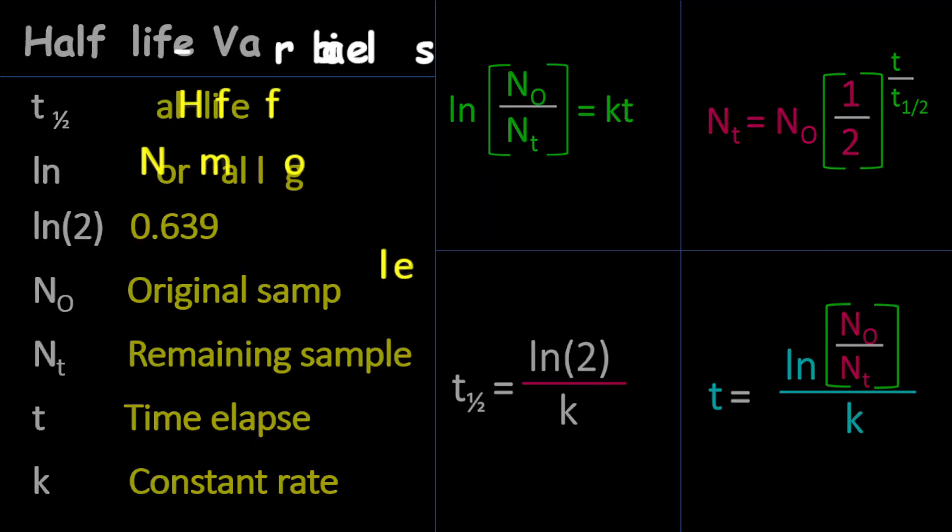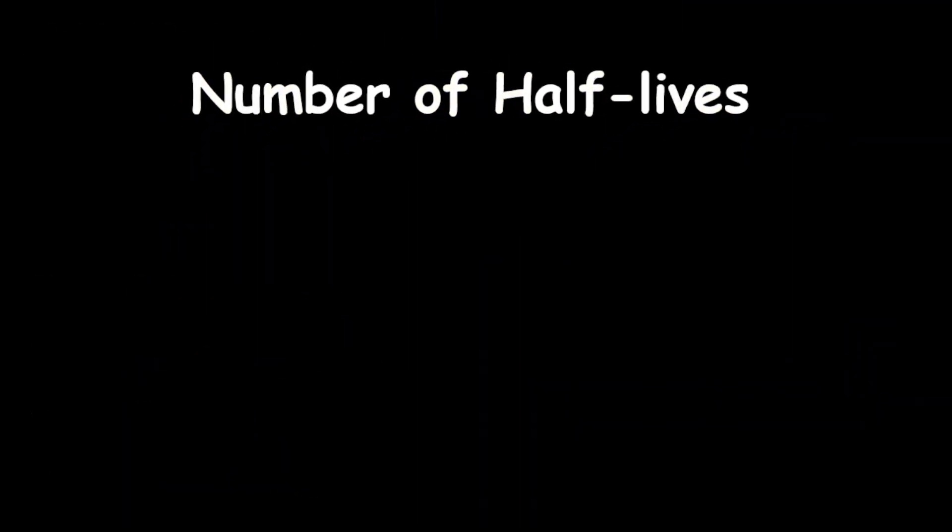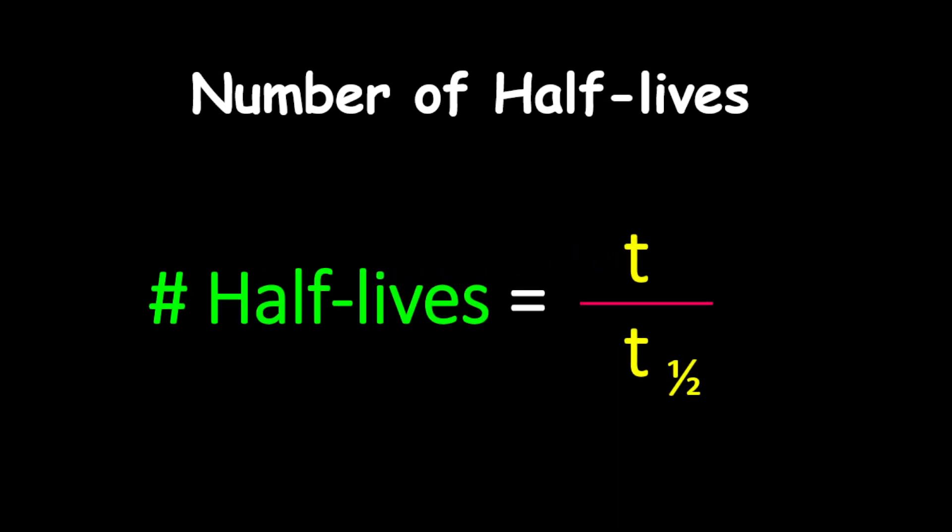So once you understand this now, I just want to quickly point out another useful formula here, which is how to calculate the number of half-lives. And the number of half-lives is very important because it is used in a lot of questions. And so the number of half-lives is given as time passed, which is t, divided by half-life.